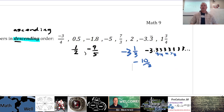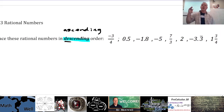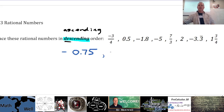So decimals are fine — we can change all these to decimals. Negative 3 quarters: do you know this one as a decimal? It's 0.75. When I hear quarters, I think of money — there are four quarters in a dollar, each worth 25 cents, so three quarters is 75 cents, or 0.75. So I always remember quarters as actual money quarters. So 0.5 is on the positive side, much greater than negative 0.75. Negative 1.8. Negative 5 is already a decimal. And 7 over 3: there are two groups of 3 inside 7, which gives 6, with 1 left over, so that's 2 and 1 third, or 2.3 repeating.